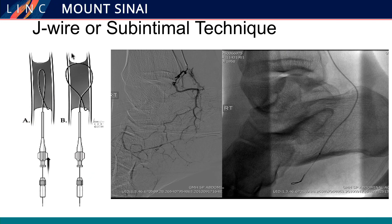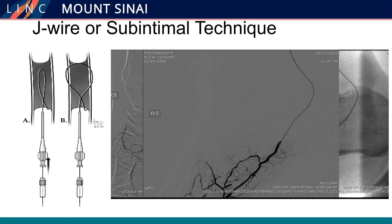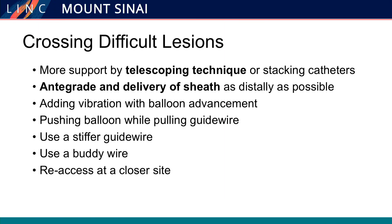We also have the J-wire sub-intimal approach. Everybody knows this approach, and we use it a lot in the SFA and popliteal. In the tibial, it's better not to do this, because we don't like to use stents in the tibial vessels as much as we can. So if you can try to cross the luminal way, it's probably better. But if you have to use it, it is obviously there and most people are familiar with how to do this.